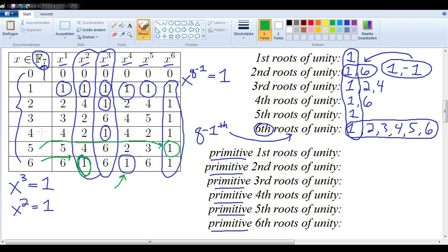So, 5, I'm looking for the first appearance of 1 in this row. That seems to be here. For 4, 4 to the 1st power is 4, 4 to the 2nd power is 2, 4 to the 3rd power is 1. Again, just always looking for the first appearance of 1 in each one of these rows.